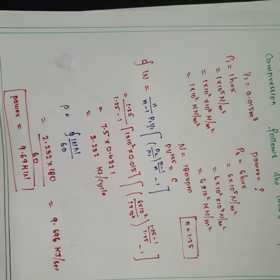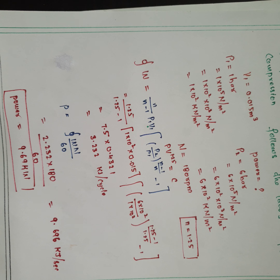To identify the process: if n = 1.4, it is adiabatic; if the question states isothermal, use the formula W = mRT × ln(P2/P1); for any other n value, the process is polytropic. Use the appropriate formula accordingly.